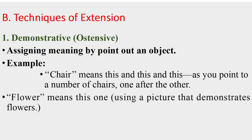Demonstrative or ostensive definition: assigning meaning by pointing out an object. For example, flour means this one, using a picture that demonstrates flour. This is the point-out-of-an-object method of demonstrative definition.